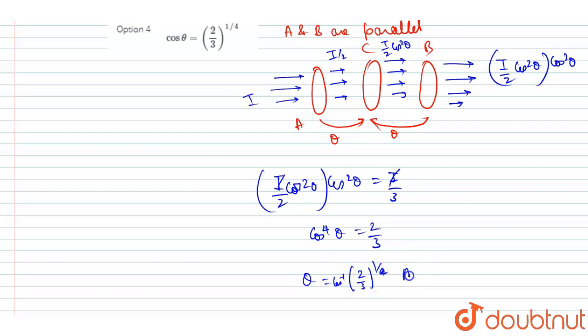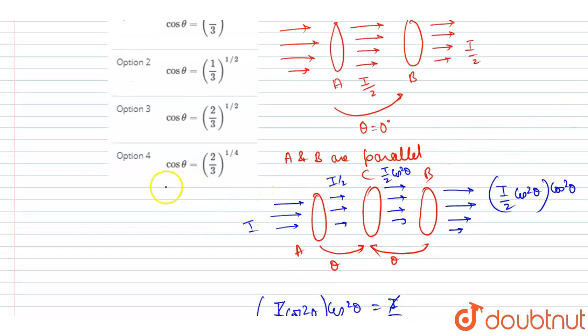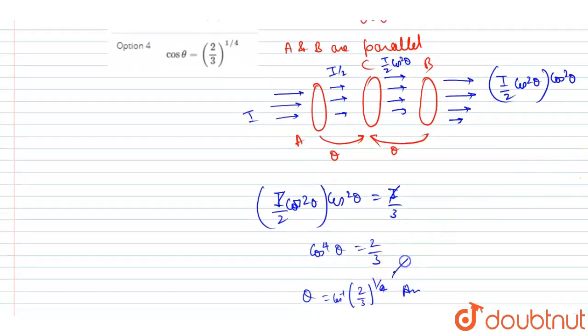So you can already see which option is correct. Yeah, so in this option, cos theta is said to be 2 by 3 to the power 1 by 4, which is already calculated by us. If you see here, so option D is the correct one.